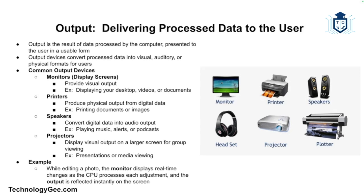We also have projectors, which take visual output from the computer and project it onto a larger screen, often used for presentations or media viewing. For example, if you're editing a photo, the monitor displays the changes you make in real time — the CPU processes each adjustment like brightness or contrast and the output is instantly reflected on the screen. Output always represents the processed result of data initially entered into the system.